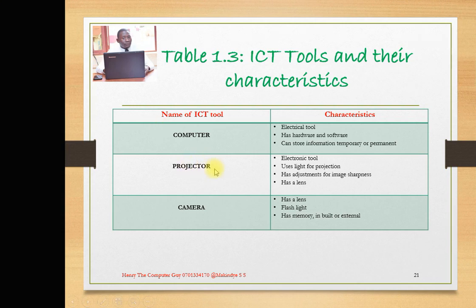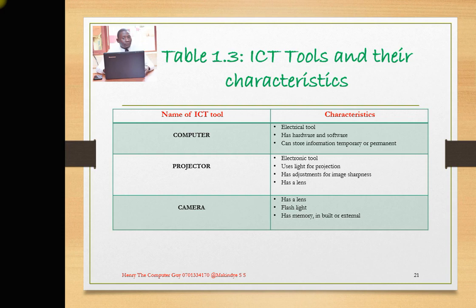The second ICT tool is a projector. It uses electricity, making it an electronic tool. It uses light for projection — you can see the light coming out of the projector to be displayed on the wall to give you a clear image. It also has adjustments for image sharpness, because when you project a picture on the wall it may not be clearly visible, so you can adjust it to get a sharp image.